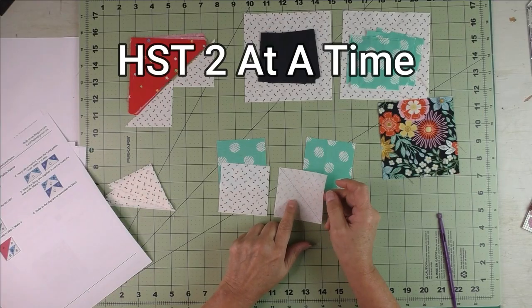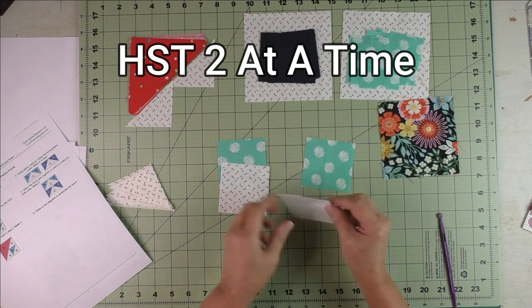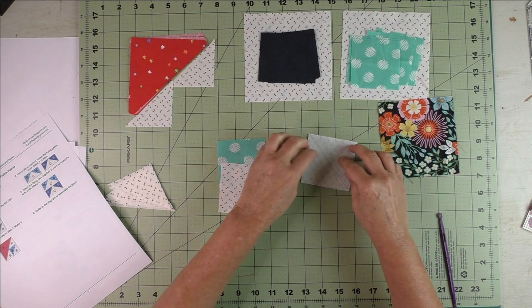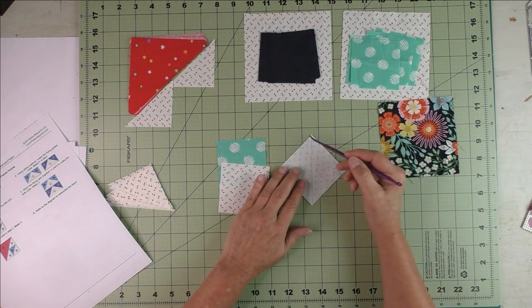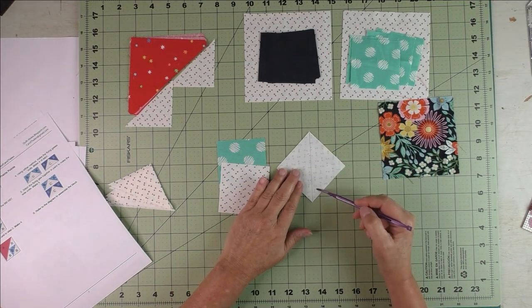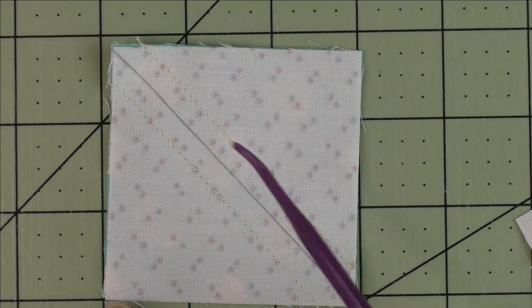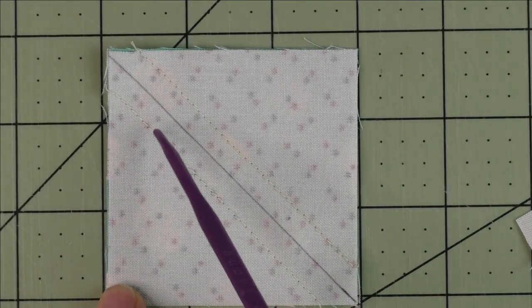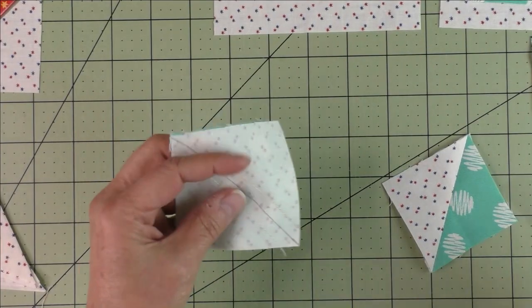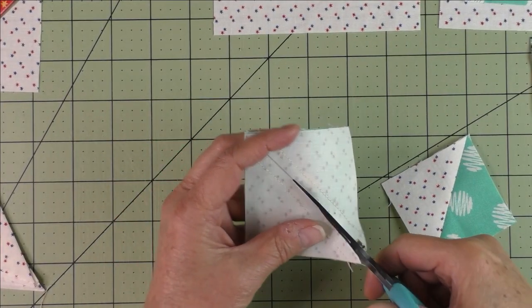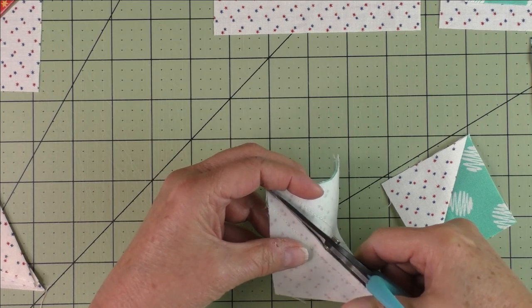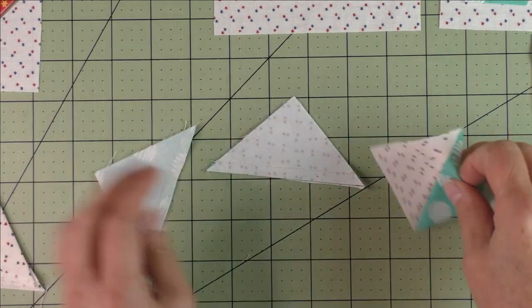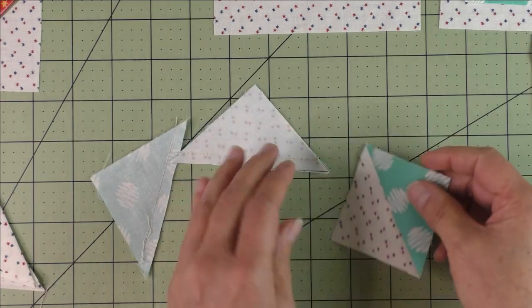On the back side of the light fabric, we're going to draw a diagonal line, put the fabrics together right sides together, and we're going to stitch on either side of the diagonal line. Here is the diagonal line drawn and then the stitching on both sides. Now we cut this in half along the diagonal line. Then we have our two half-square triangles. Press the seams open and cut off the nubs.